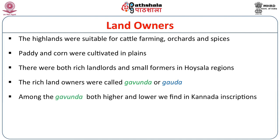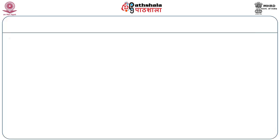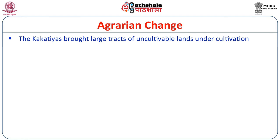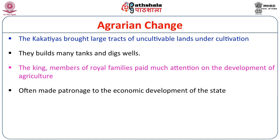There were both rich landlords and small farmers in Hoysala regions. The rich landowners were called Gouda or Gaunda. Among the Gaundas, higher and lower ranks are found in Kannada inscriptions. Praja Gaundas were lower in status than the wealthy Prabhu Gaunda. Apart from the landowning community, there were also tenant cultivators and the landless agricultural community during the Kakathia and Hoysala period. During the Kakathia period, there were many agrarian changes. The Kakathias brought large numbers of uncultivable lands under cultivation and built many tanks and dug wells for the promotion of agricultural products.